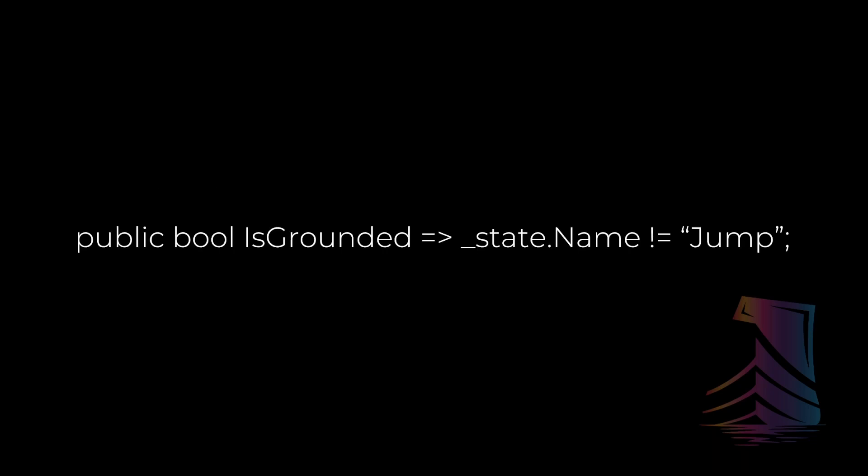This is another good example of when a calculated property comes in handy — when you want to return a value that's dependent on the value of something else. This example is a real one that I pulled from the game that I'm currently making. The player character has several states, like idle, walk, and jump. This property, being a bool, returns true or false based on the calculated expression after the arrow. If the name of the current state is not equal to jump, it will return true — or rather, if the player is in the jump state, isGrounded will return false. It's far less cumbersome to declare a calculated property to return this value rather than typing if state.name is not equal to jump every time I want to check. And since this is calculated, no variable is stored behind the scenes, and this check is only done when I use the isGrounded property.